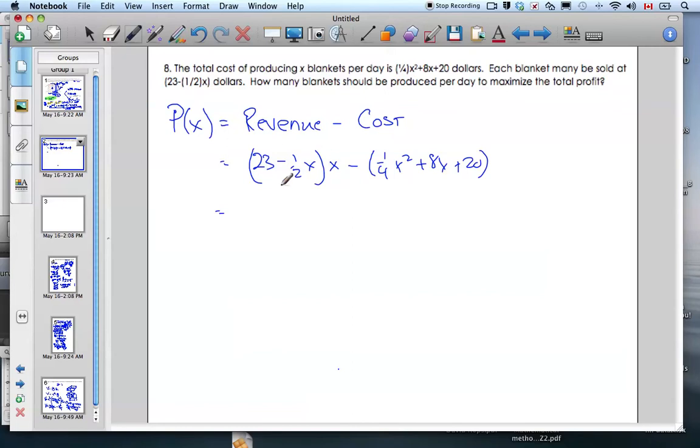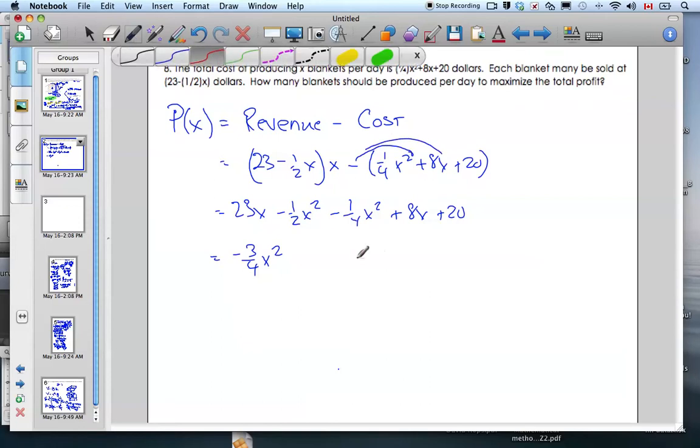If I simplify this function, I get 23X minus half X squared minus quarter X squared plus 8X plus 20. Continuing to simplify, I get negative three-quarters X squared. Oh, careful here—I forgot to distribute my negative signs, so I have to make these negative.